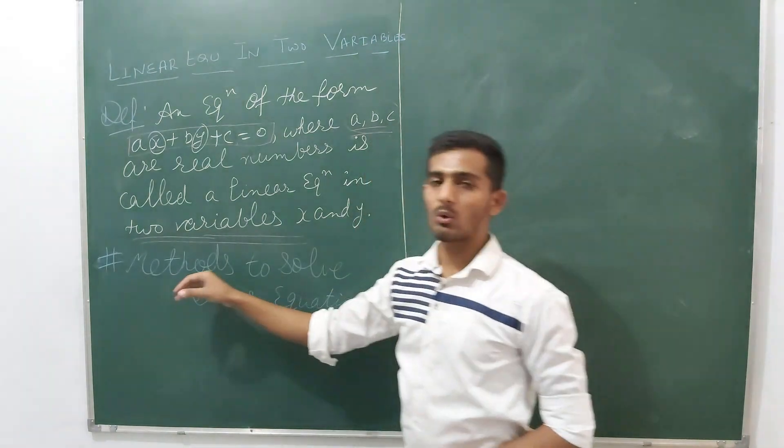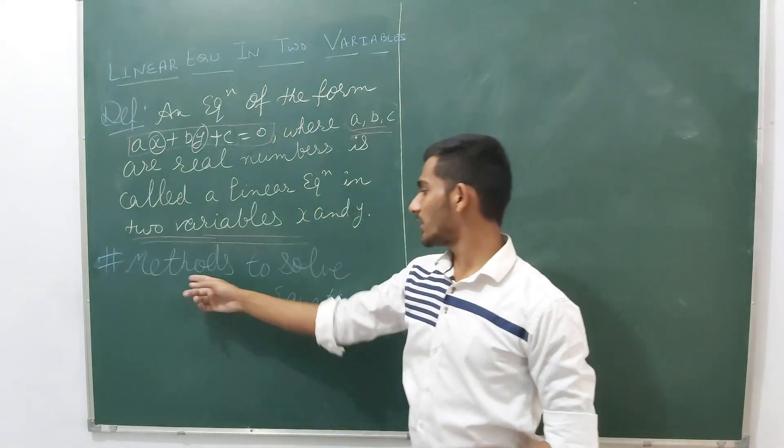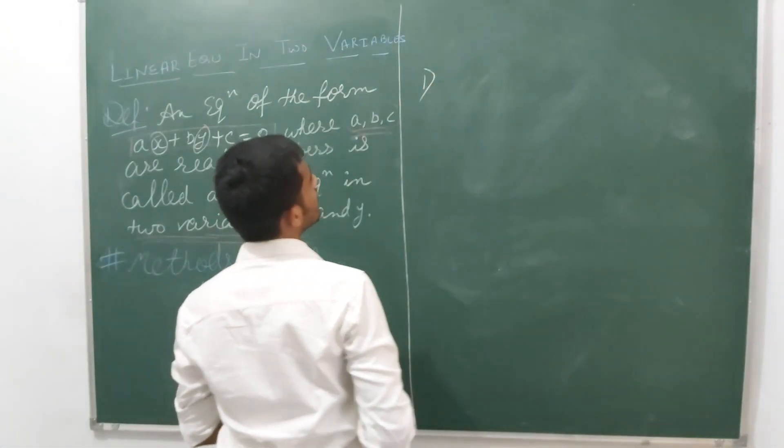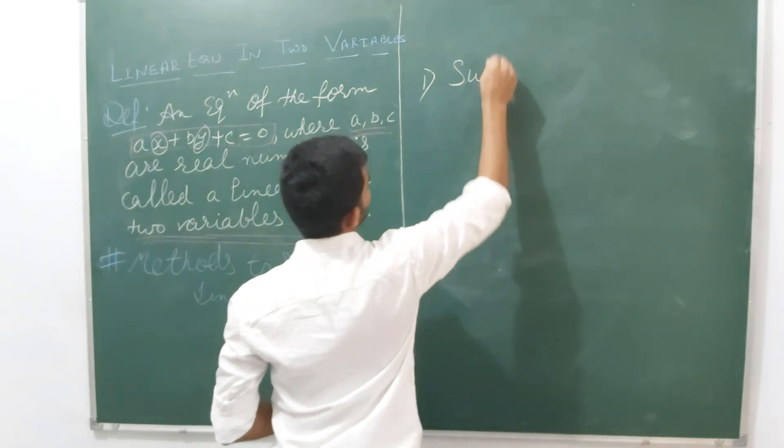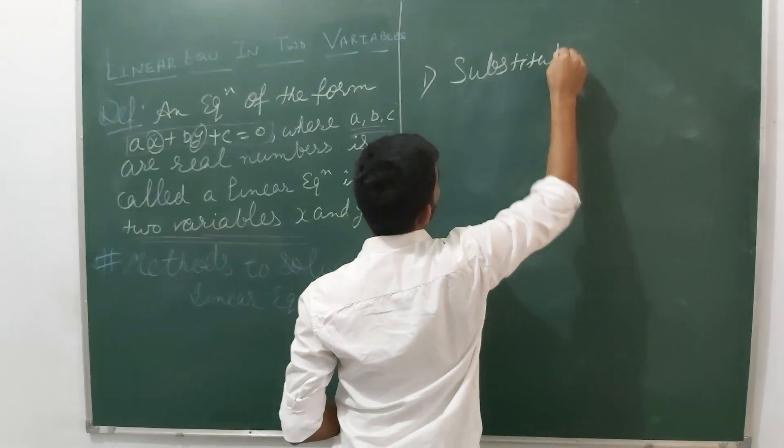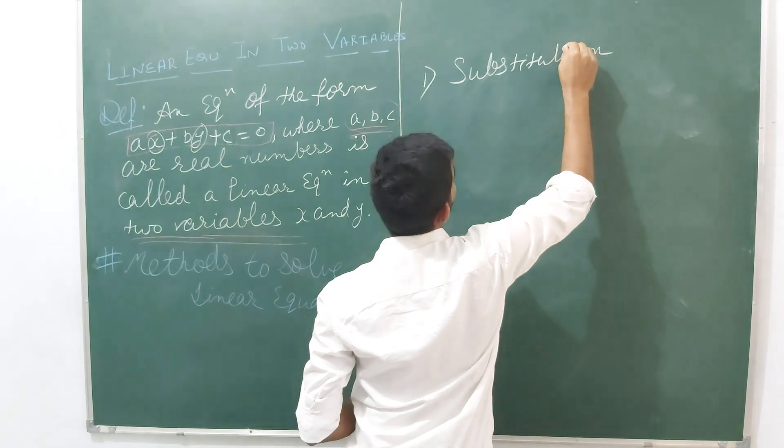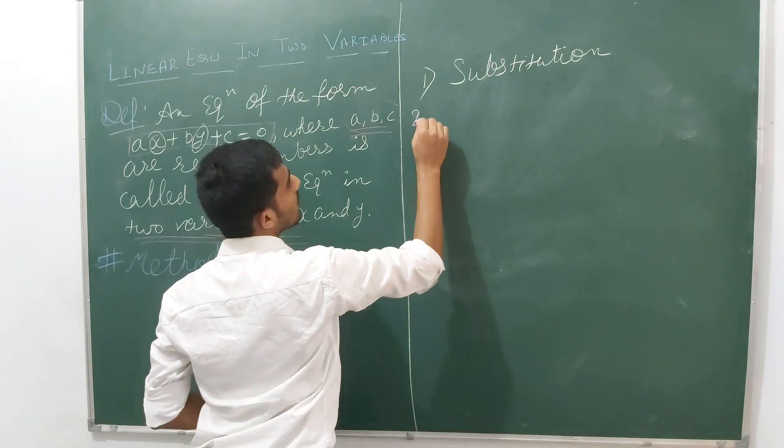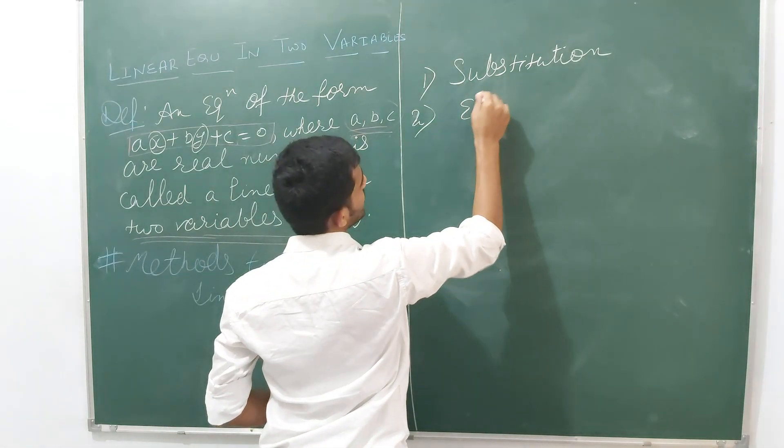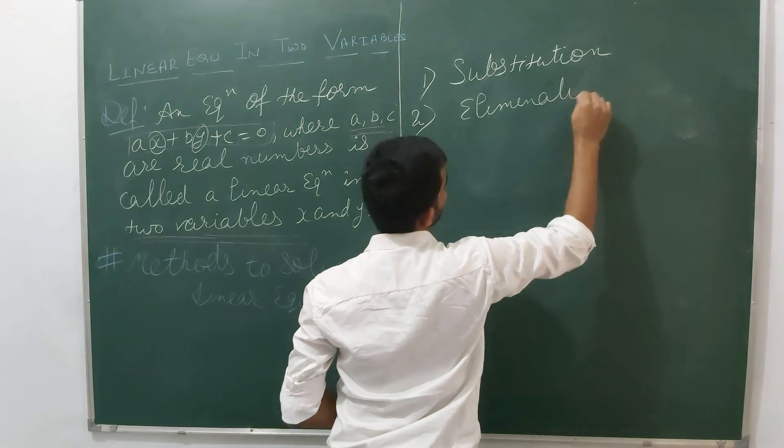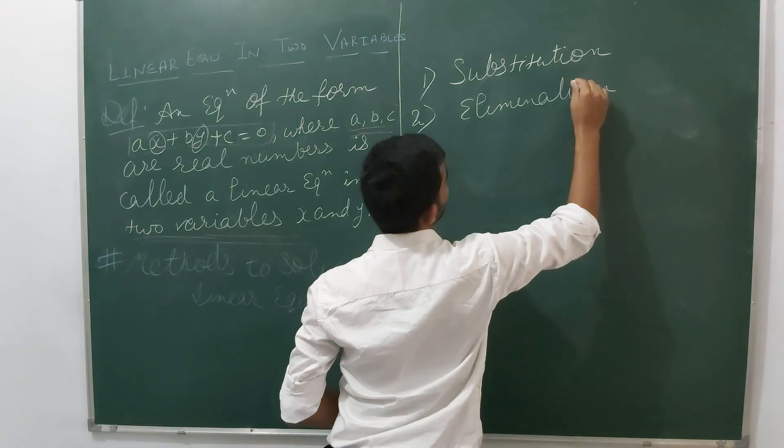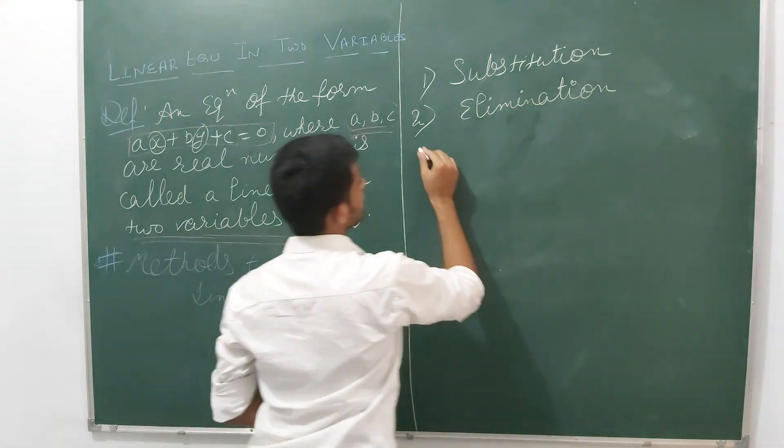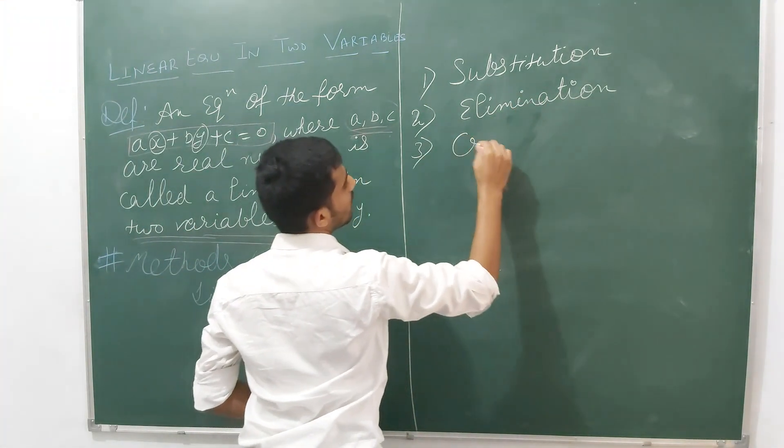Now let's see how to solve such equations. We have four methods to solve linear equations. First one is substitution method. Second one is elimination method. Third one is cross multiplication.